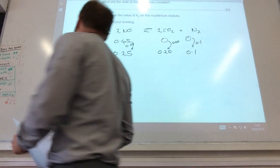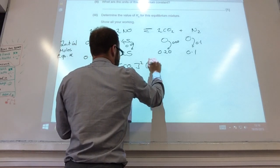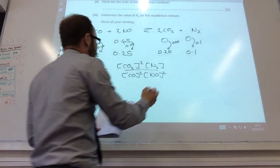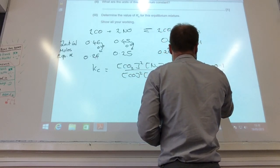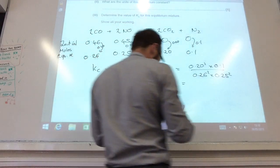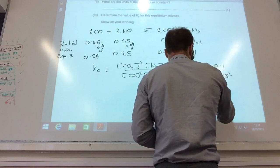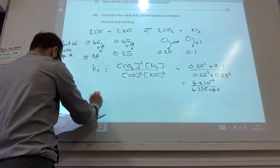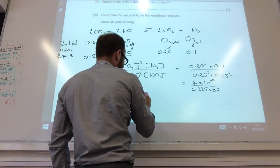You then put that into Kc. Let's just write out Kc again, there we go. Got those numbers in so it's going to be 0.20^2 × 0.1 over 0.26^2 × 0.25^2, and this is when most people mess up on their calculators, which is easy to do. That comes to 4×10^-3 divided by 4.25×10^-3, and if you calculate that it should end up to be 0.95 mol^-1 dm^3.